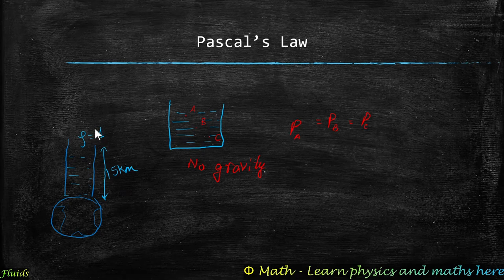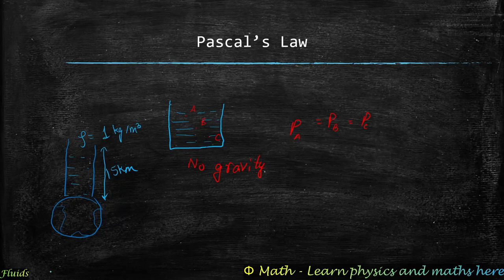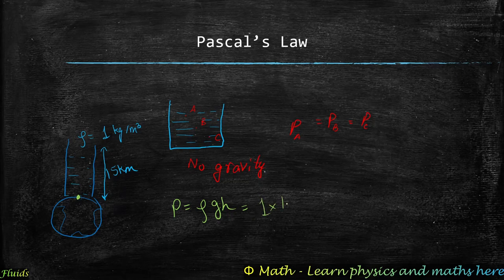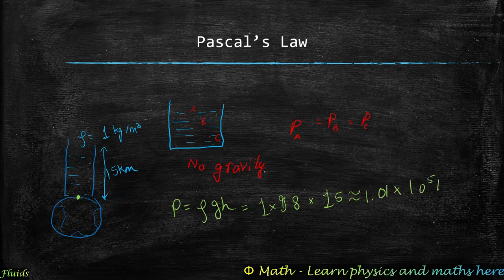We take the density of the atmosphere as approximately 1 kg per meter cube. Applying the formula P = ρgH with g = 9.8 m/s² and H = 15 km, we get roughly 1.01 × 10⁵ Pascal, which is defined as one atmosphere or 1 atm.